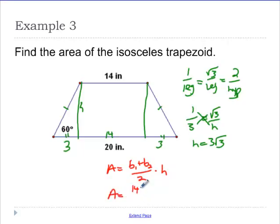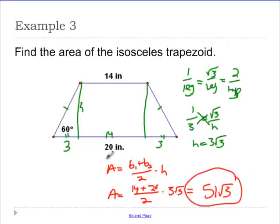So, 14 plus 20 divided by 2 times my height of 3 square root of 3. So, 34 divided by 2 because 14 plus 20. You get 17, multiply that by 3, and we get that the area is 51 square root of 3. Remember, don't type in the square root of 3 into your calculator. Just put it at the end.